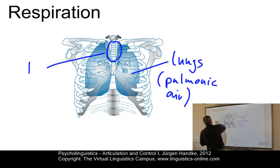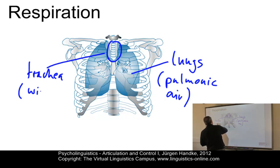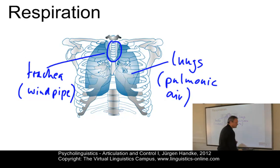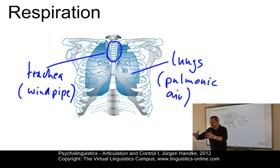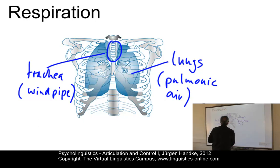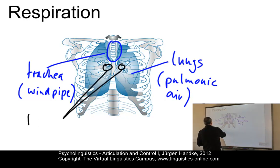This is the trachea — or, alternatively, you can refer to it as windpipe. And then we have two bronchial tubes which join at the base of the trachea. Here they are, the two tubes.